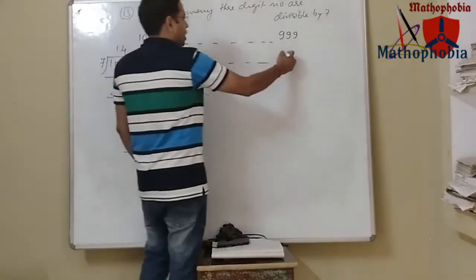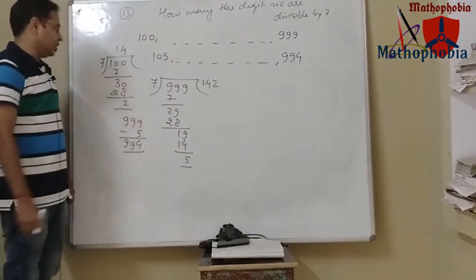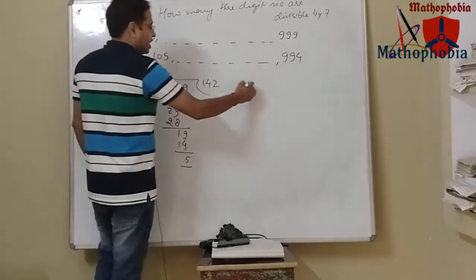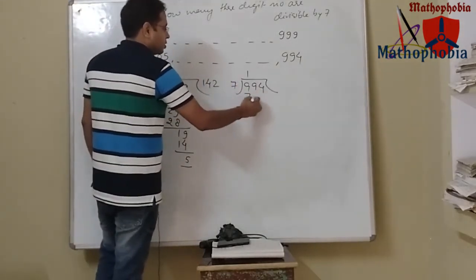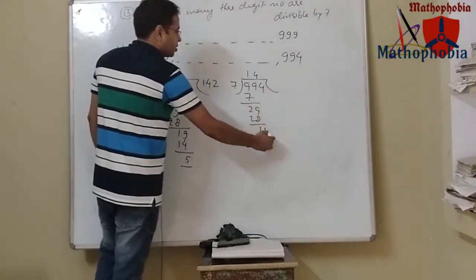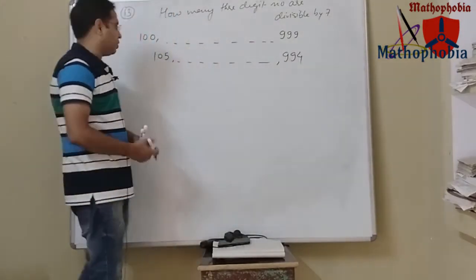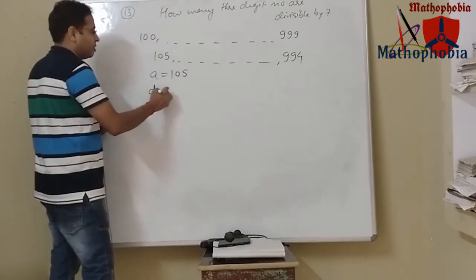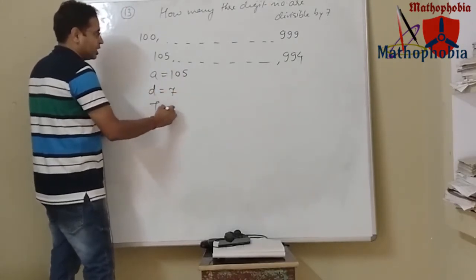We subtract 5 from 999 to get 994. Let's check whether 994 is divisible by 7 — yes it is. So we have the nth term of this arithmetic sequence whose first term is 105, common difference is 7, and last term is 994.